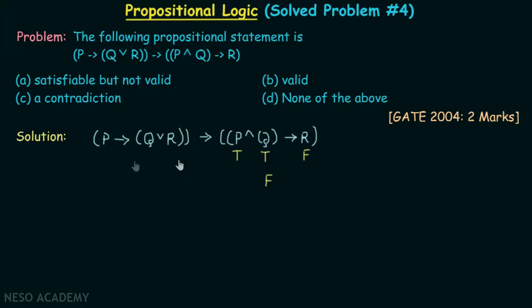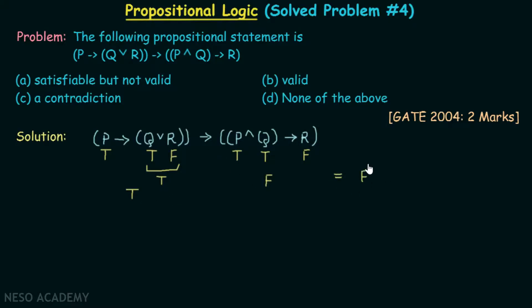With p true, q true, r false, this whole compound proposition becomes false. Now plugging these values into the full proposition: true or false is true, and true implies true is true. Finally, true implies false is false. Since we were able to make this compound proposition false with one truth value combination of p, q, and r, we can say it is not valid — that option is eliminated.